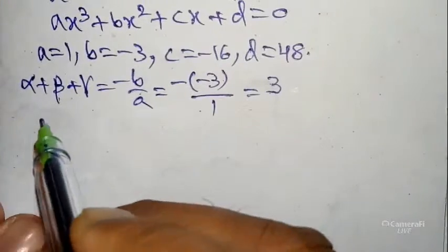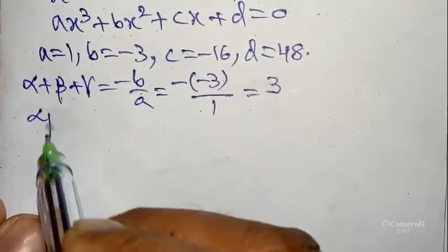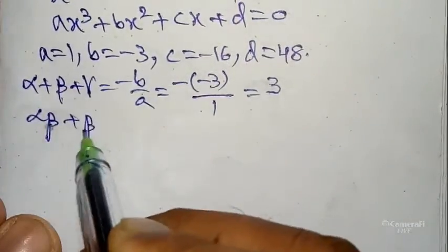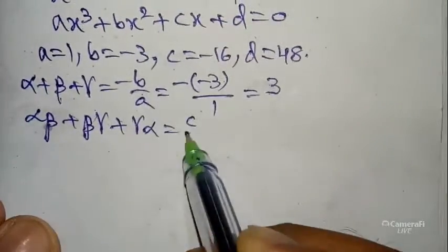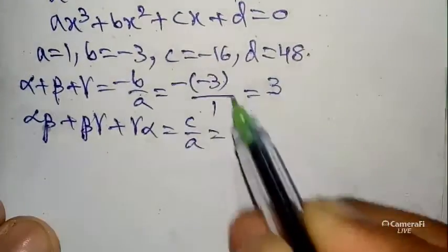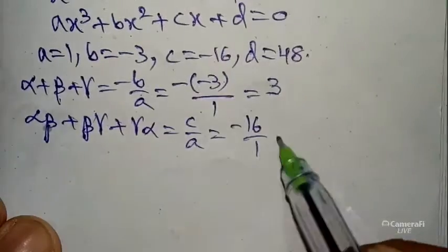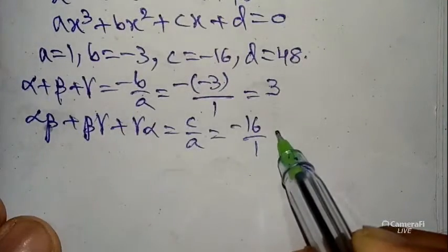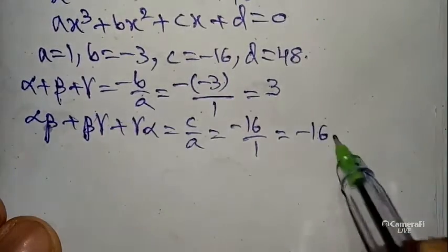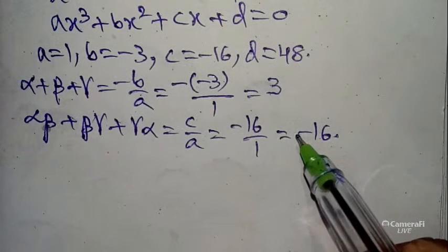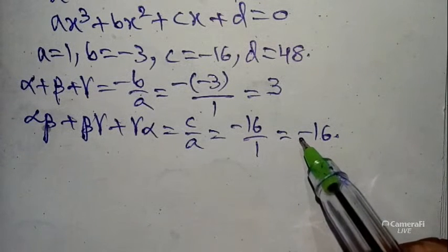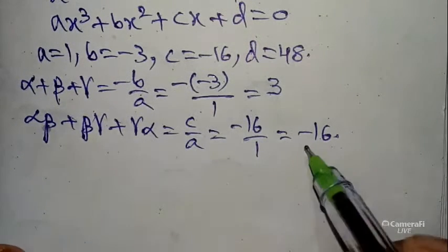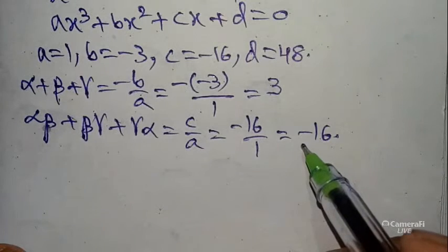Number two: sum of the products of the roots — alpha·beta + beta·gamma + gamma·alpha = c/a. Here c = -16, a = 1, so the value is -16/1 = -16.